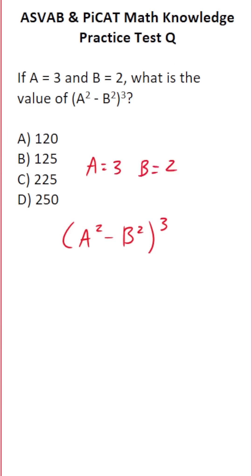Let's start by plugging those values in accordingly. This becomes 3 squared minus 2 squared, to the third power. 3 squared is the same thing as 3 times 3, which is 9.